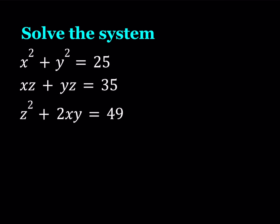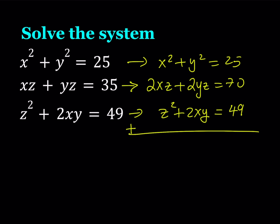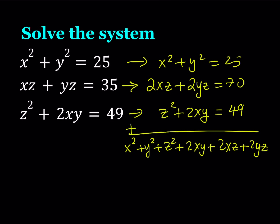I'm going to manipulate these equations to get something nice. I'm going to double the second equation, giving me 2xz plus 2yz equals 70, and keep the first and third equations. My goal is to get x, y, xz, and yz with the same coefficient of 2. Adding all three equations gives x squared plus y squared plus z squared plus 2xy plus 2xz plus 2yz, and the sum equals 144.